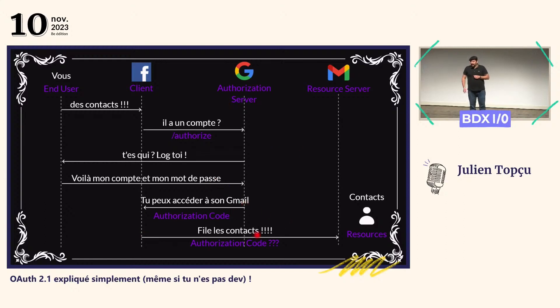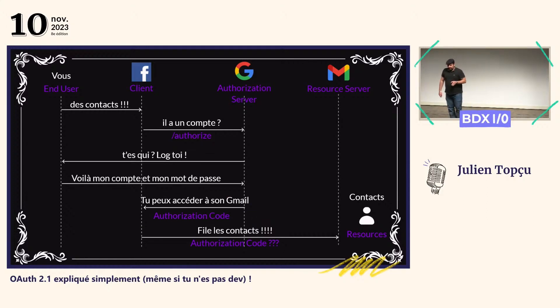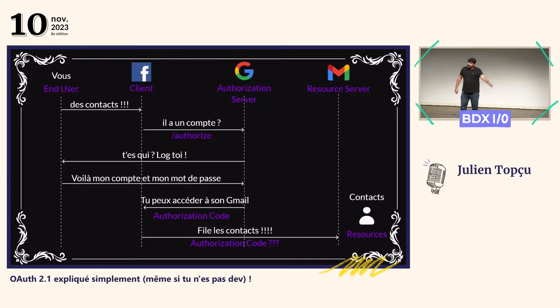Facebook va pouvoir ensuite utiliser cet authorization code pour aller récupérer vos contacts dans Gmail. Dans ce scénario, votre mot de passe Gmail est resté entre vous et Google. À aucun moment, Facebook n'y a eu accès. À la place, il a un authorization code temporaire qui va avoir une durée de vie de 15 minutes. Si Facebook ne l'utilise pas dans les 15 minutes, il va falloir vous réauthentifier.